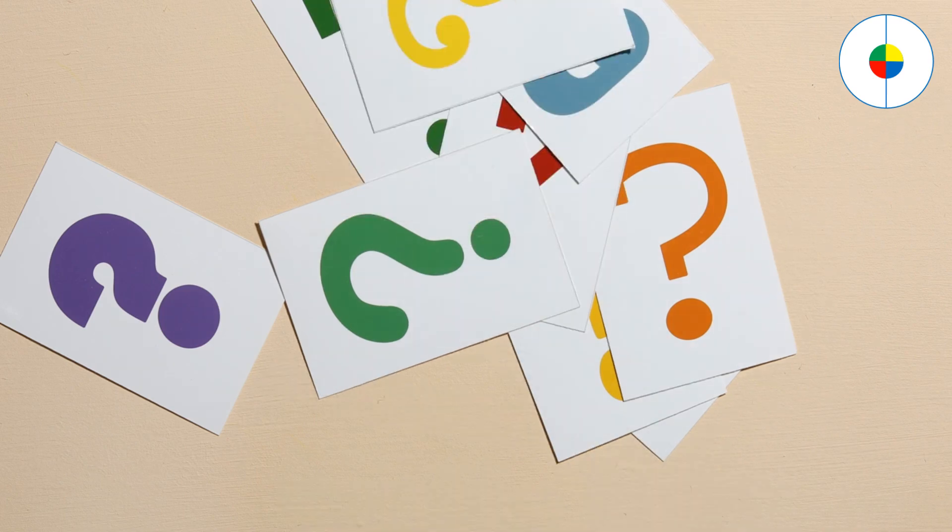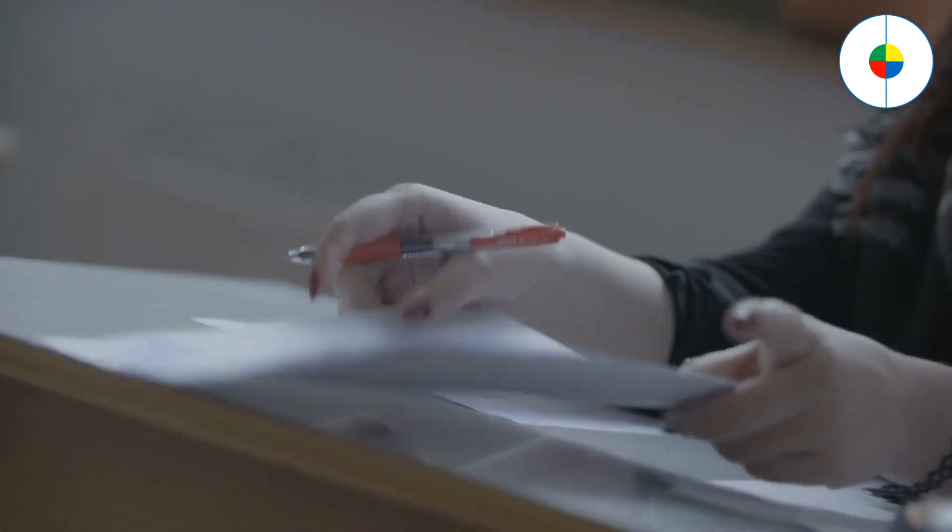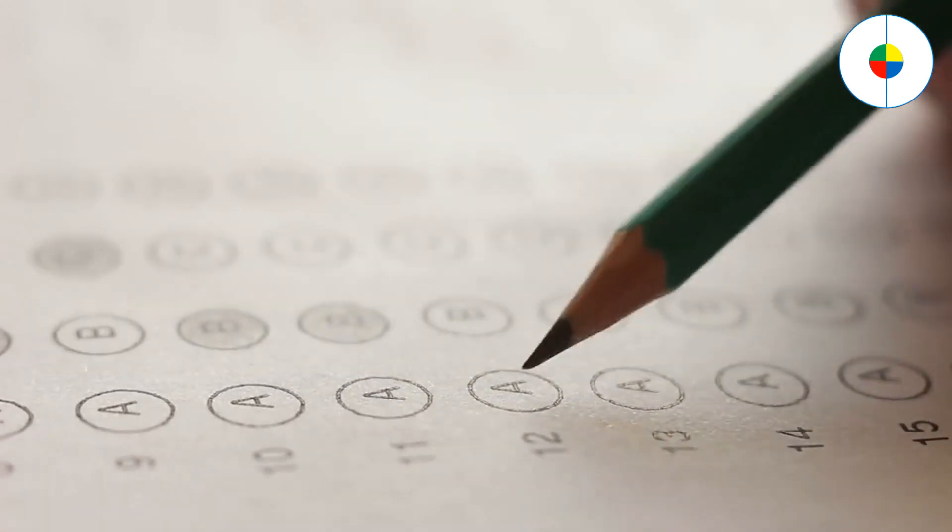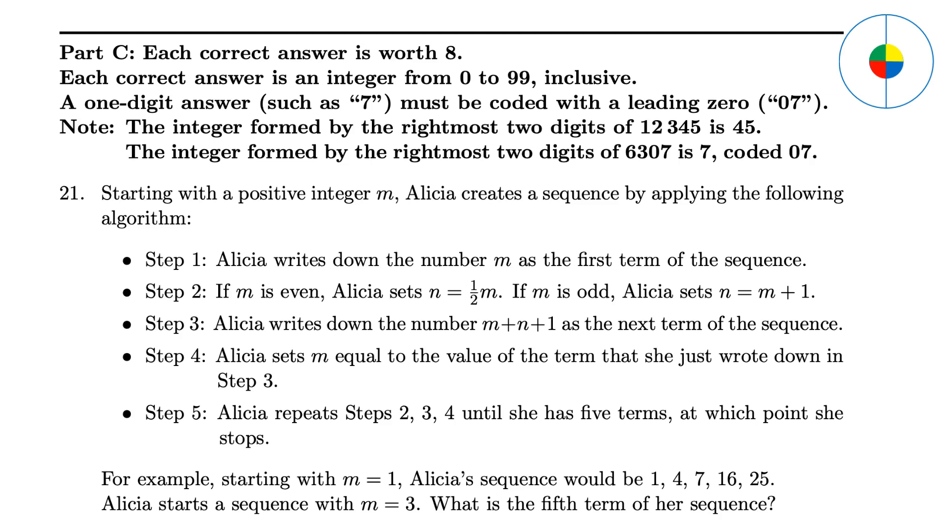Part C: Hard questions. Those are more complex than grade 7 and grade 8. You need to write your own answers instead of picking an option. Question 21 - You need to do some calculation. When M equals 3, the first N is 4. The next number is 3 plus 4 plus 1 equals 8. Do some similar calculations. The fifth number will be 43.